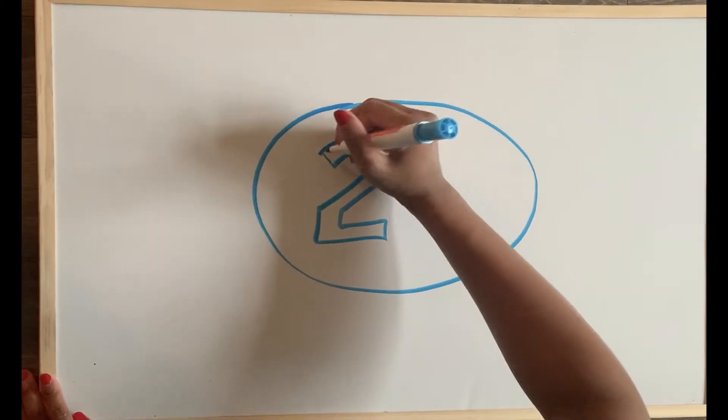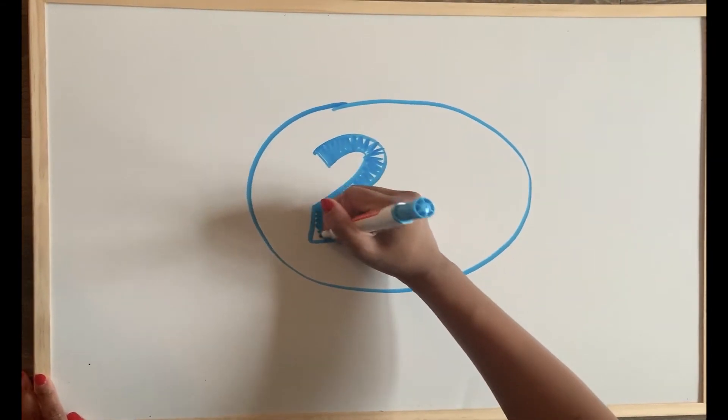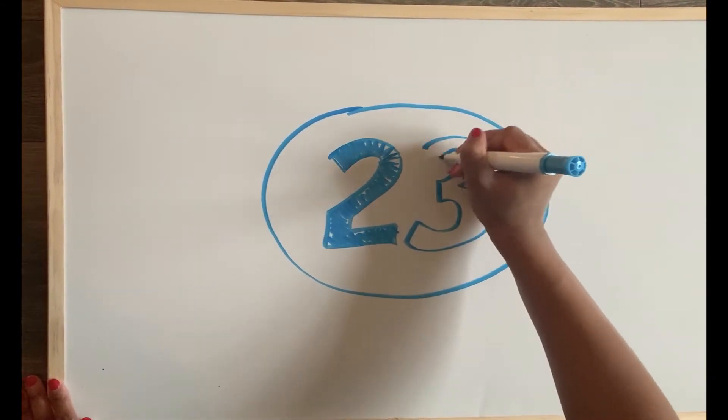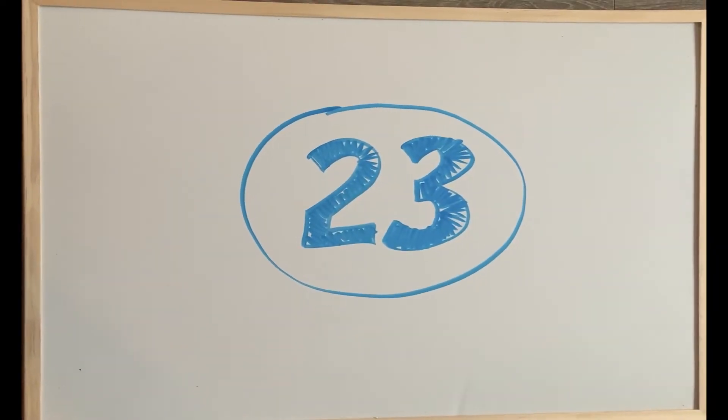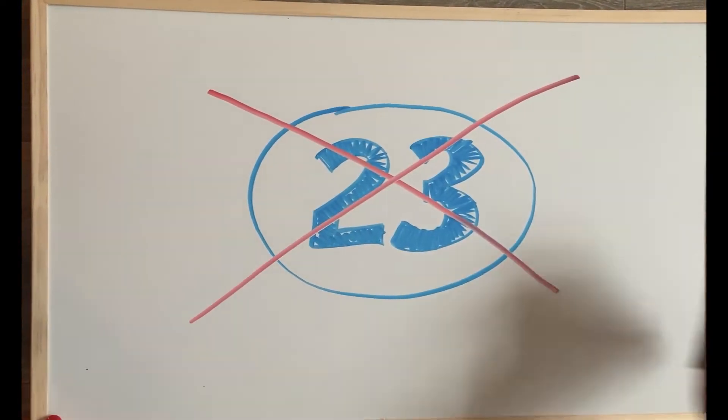When errors occur within either step of meiosis, this results in gametes with the incorrect number of chromosomes. If the extra or missing chromosome happens to be a sex chromosome, and a zygote is formed, a sex chromosome abnormality ensues.